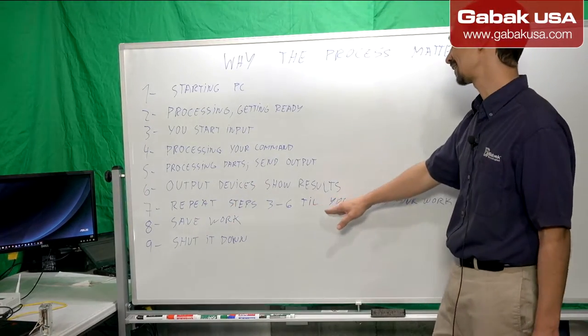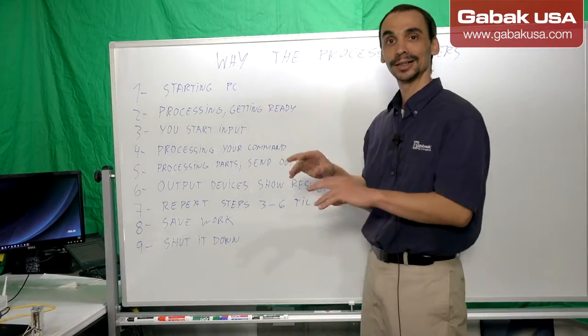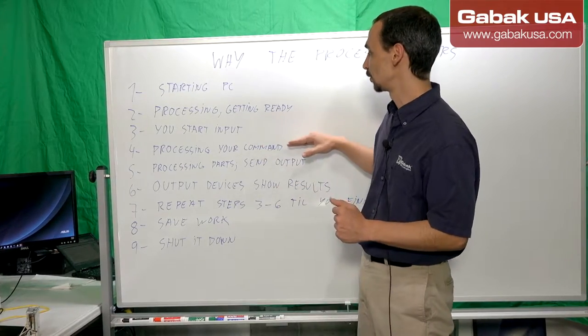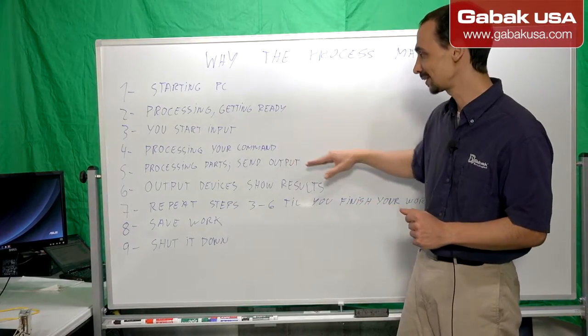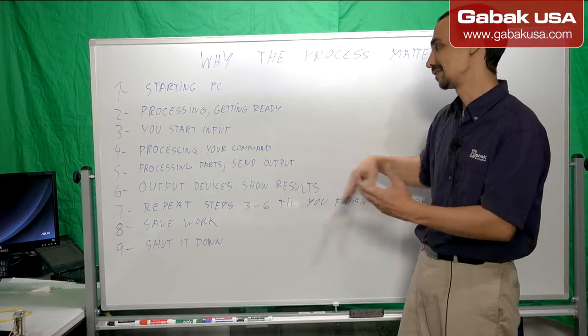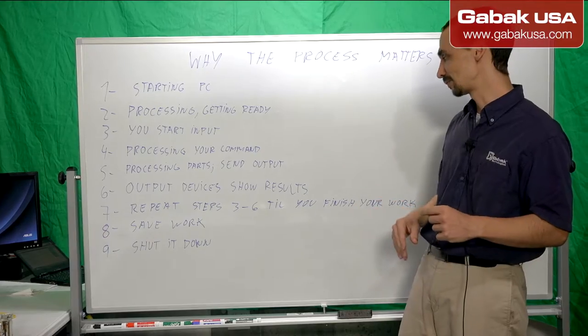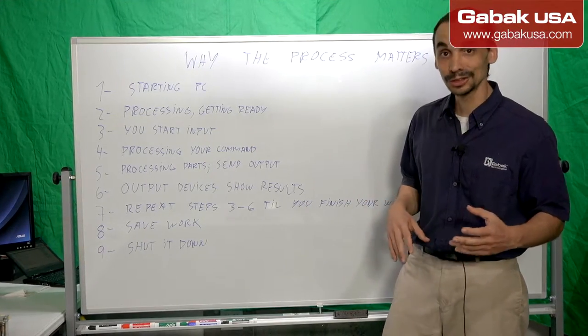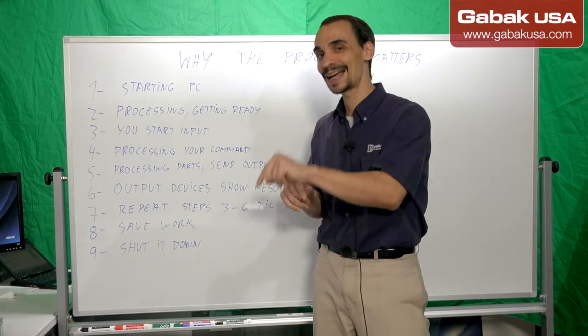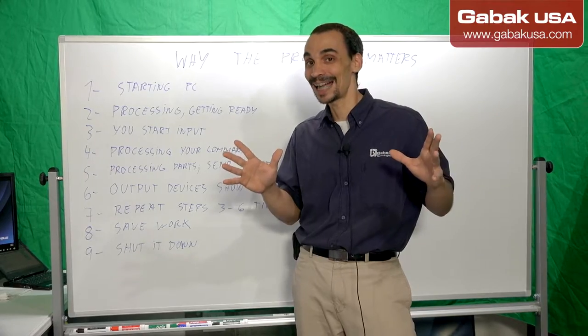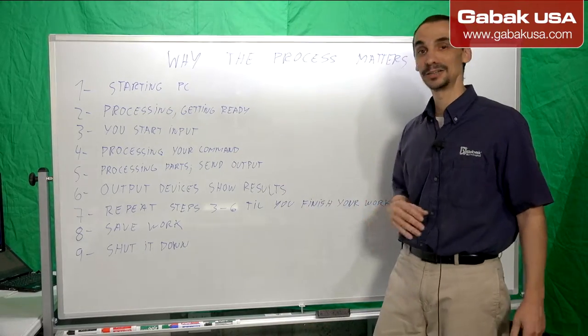And number seven, repeat steps three to six until you finish your work. So let's say you start with Word and then you double click on Word. It will start processing your command, then processing the parts and send the output. Number six, output device shows result. And then let's say you type H like hello, then I, and then you have hi. And like that, you keep repeating the process all over again until you finish your work.